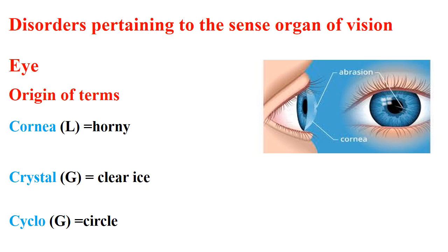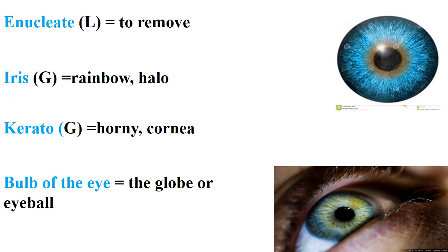Now we move to disorders of the organ of vision — the eye. The origin of terms includes 'cornea', referring to the cornea. The term 'crystall' means clear eyes. The term 'cyclo' means circle.